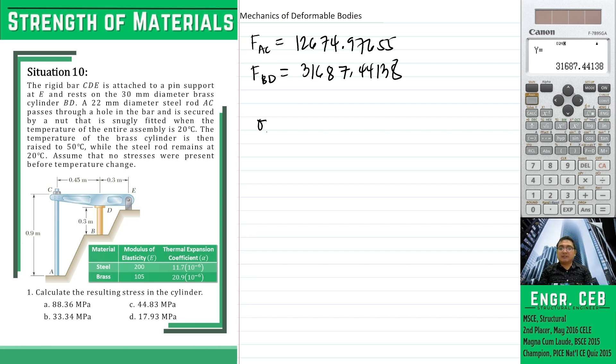Okay, so the stress in cylinder bd is simply the force divided by the area of bd. We have, take note that the forces that we have obtained is in newtons. So we have 31,687.44138 divided by the area of bd. That is π over 4, 30 squared. Therefore,